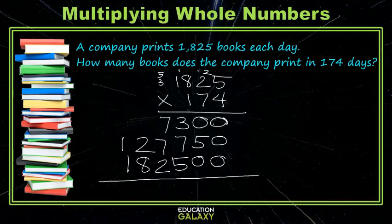Now, finally, we can add all of the rows. In the 1's place there's just a 5. In the 10's place, we have 3 plus 7 is 10, plus 5 is 15, carry the 1. 7 and 7 is 14, plus 2 is 16, plus the 1 we carried. 2 and 8 is 10, plus the 1 we carried. And finally, our answer. So multiplying these large numbers is just a matter of keeping things nice and tidy. Thank you.